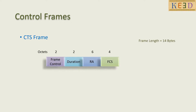CTS frame looks like this. TA is not required, as the transmitter of RTS knows that the response frame is sent to it by matching the RA of the CTS frame with its own address. The duration in CTS equals duration in RTS minus SIFS minus TX time for CTS.